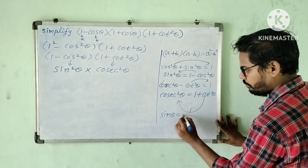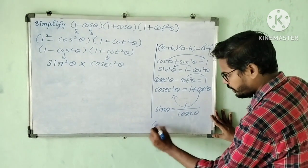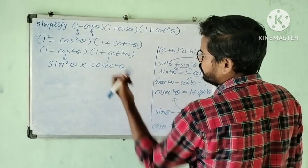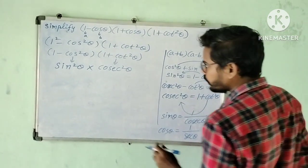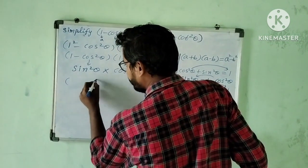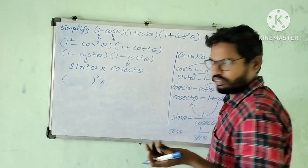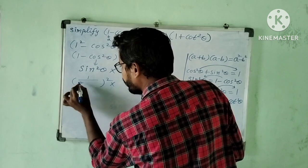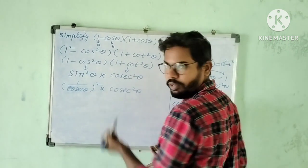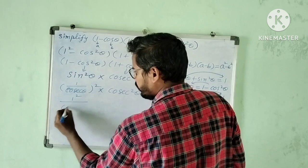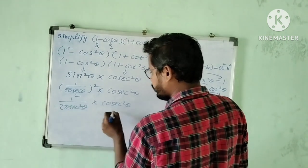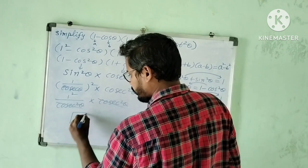We know that sin theta equals 1 by cosecant theta. Similarly, cos theta equals 1 by secant theta. Here we have sin squared theta into cosecant squared theta. Sin squared theta means sin theta whole squared, so in place of sin theta we write 1 by cosecant theta. So it becomes 1 squared by cosecant squared theta into cosecant squared theta. The cosecant squared theta cancels, and 1 squared is 1. So the final answer is 1.